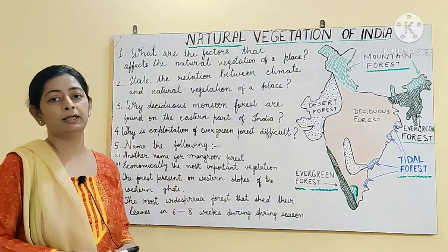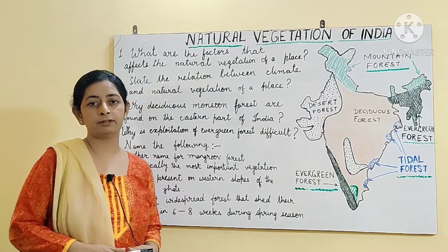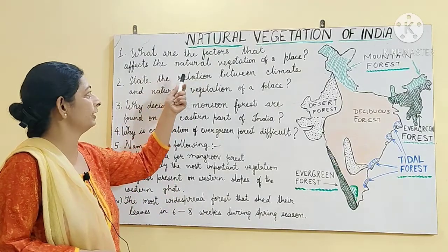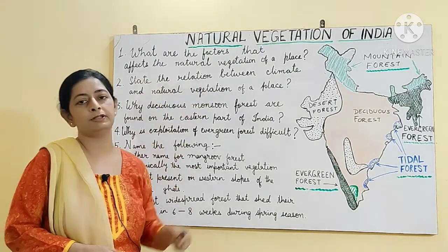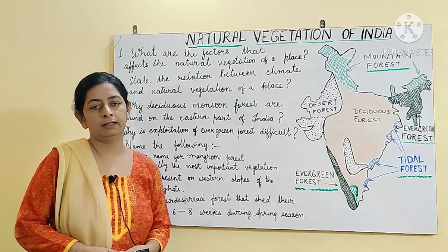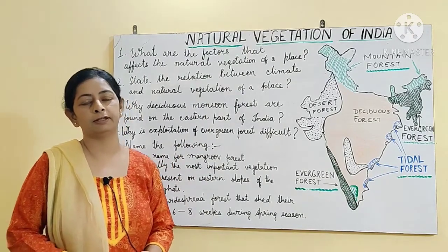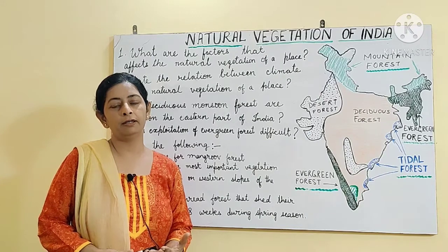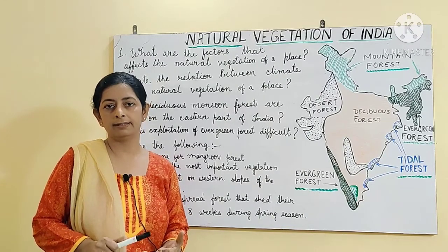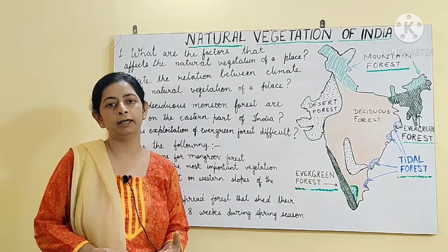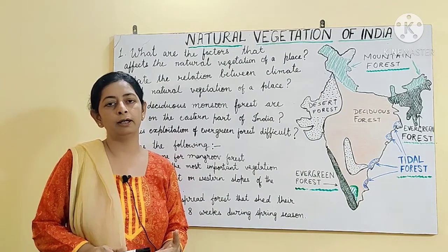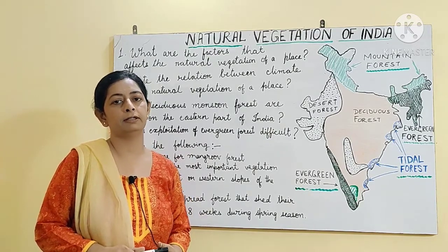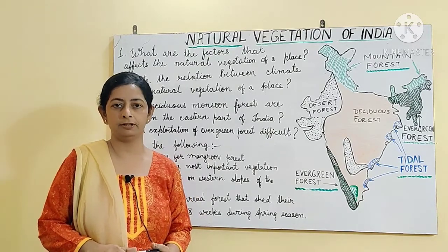Let us begin with the first question answer. What are the factors that affect the natural vegetation of a place? There are four important factors: rainfall, relief, soil, and temperature.